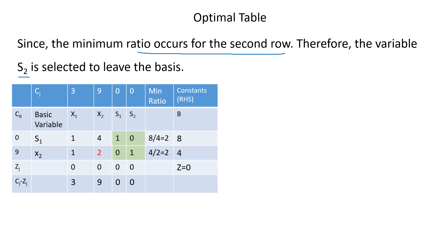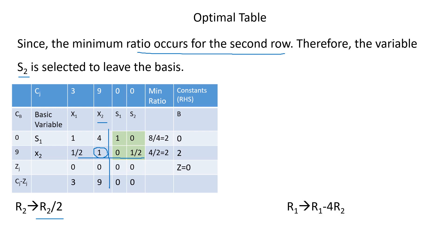So s2 is the leaving variable and x2 is the entering variable — x2 replaces s2. From the table, the intersection of the pivot column and pivot row gives a pivot value of 2. We must make the pivot value equal to 1 using the elementary row operation r2 = r2 ÷ 2. Then to make the remaining pivot column values zero, we use r1 = r1 − 4r2.